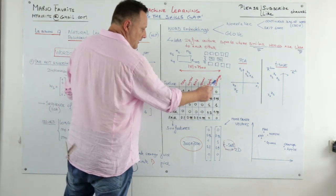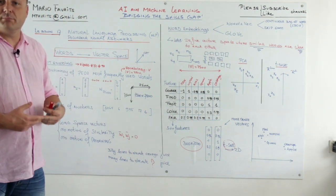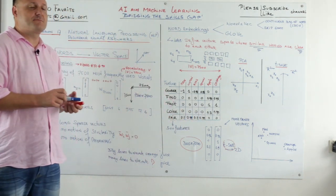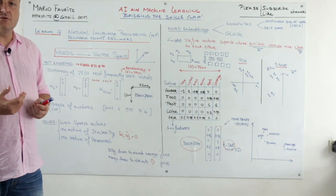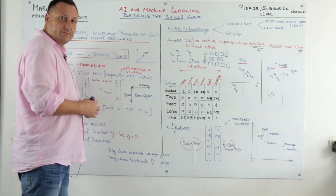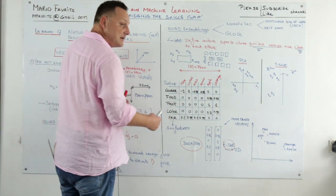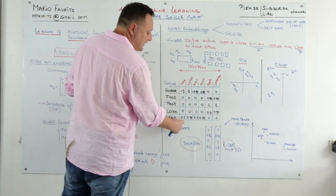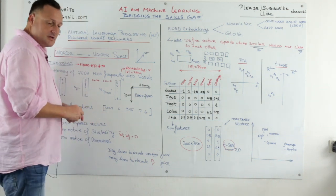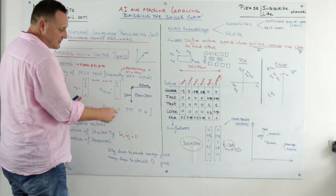For color, orange scores about 0.98 since orange is definitely a color. Apple is not a specific color, but sometimes people say 'apple green,' so it might score around 0.3. For hair, we assume a man scores lower than a woman on this feature, reflecting typical hair length.